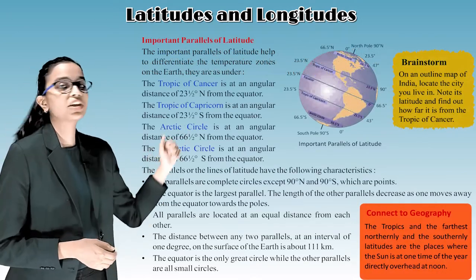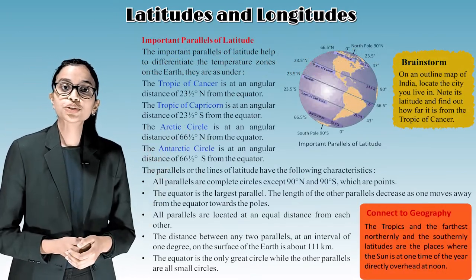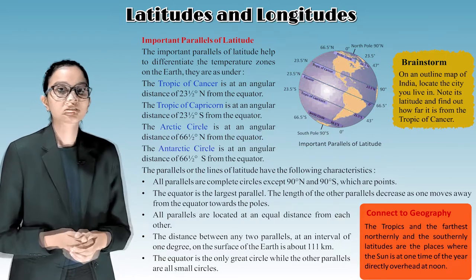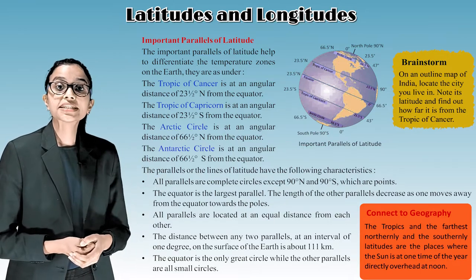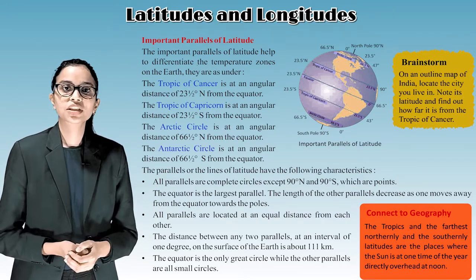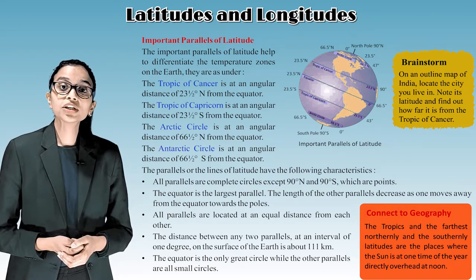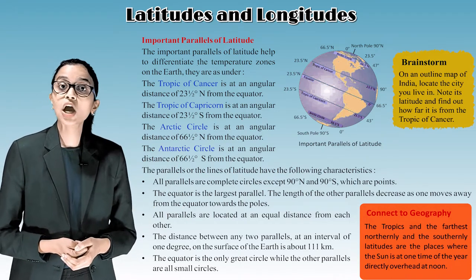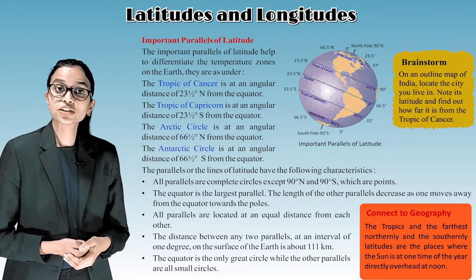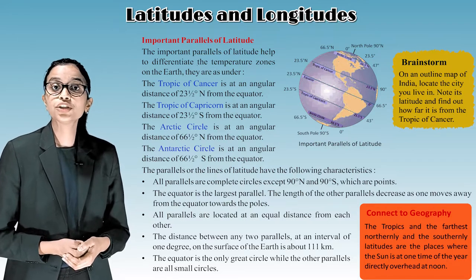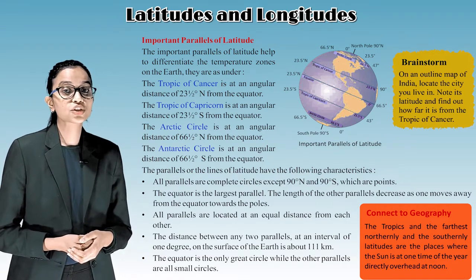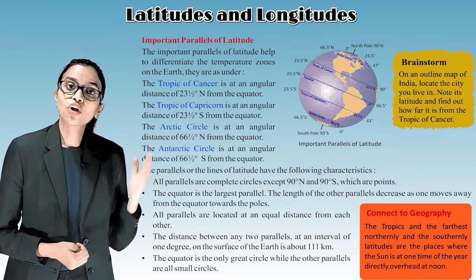Important parallels of latitude help to differentiate the temperature zones on the earth. The Tropic of Cancer is at an angular distance of 23.5 degrees north from the equator. The Tropic of Capricorn is at an angular distance of 23.5 degrees south from the equator. The Arctic Circle is at an angular distance of 66.5 degrees north from the equator. The Antarctic Circle is at an angular distance of 66.5 degrees south from the equator.